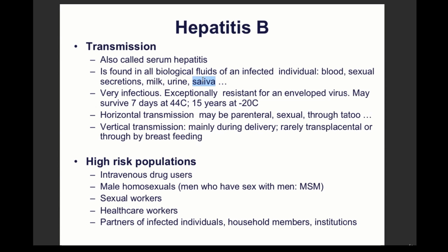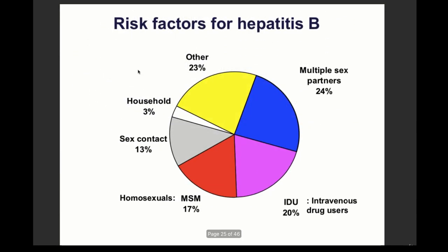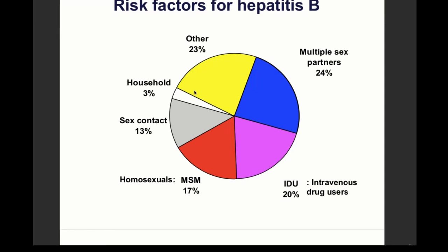Hepatitis B is very infectious and very resistant compared to other enveloped viruses, surviving at 44 degrees Celsius for seven days. High-risk populations include IV drug users, recipients of blood transfusions, homosexuals, sex workers, healthcare workers, and partners or household members of infected individuals. Blood donors are screened for these risk factors.